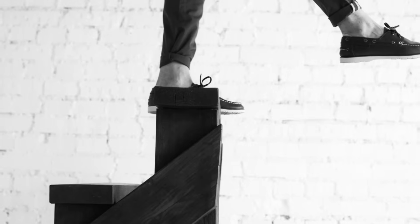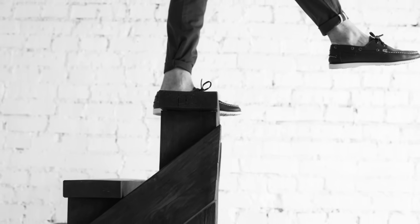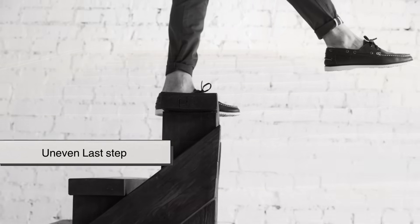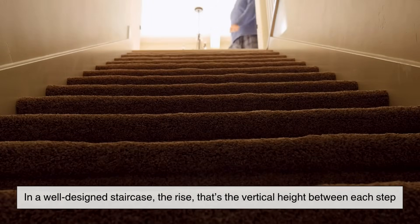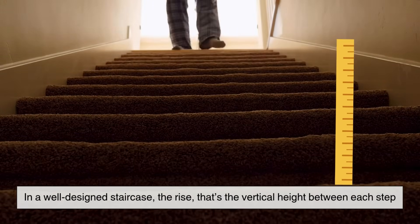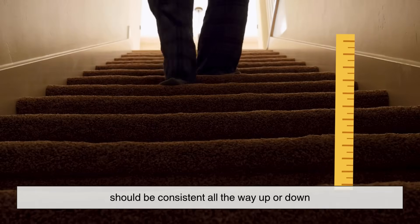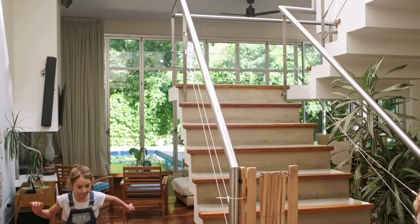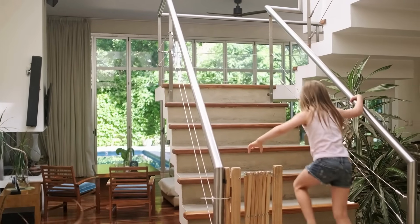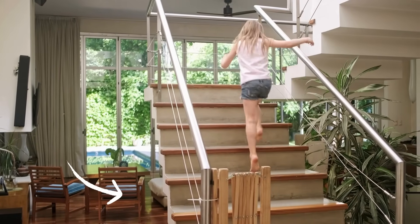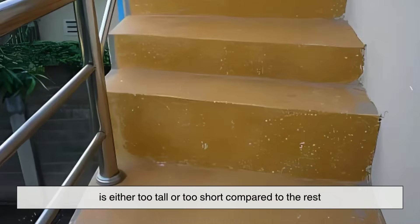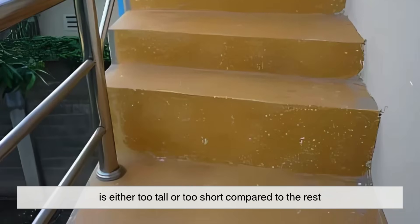Let's start by understanding what we mean by uneven last step. In a well-designed staircase, the rise—that's the vertical height between each step—should be consistent all the way up or down. But sometimes, the last step, whether it's the first one at the bottom or the final one at the top, is either too tall or too short compared to the rest.